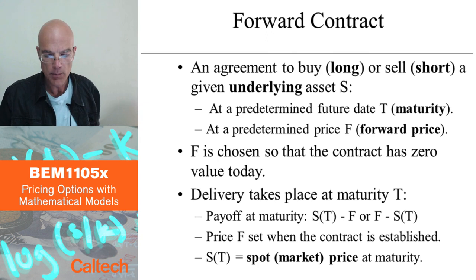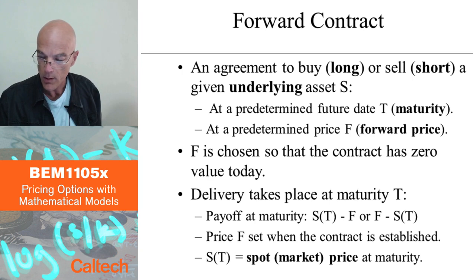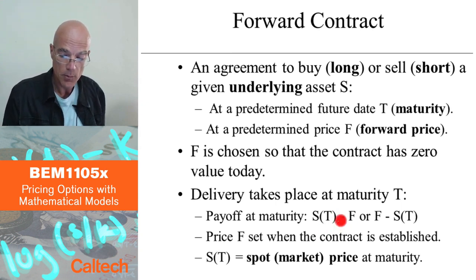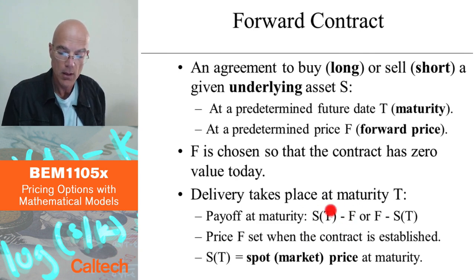The delivery takes place at maturity. In practice, usually there is no delivery — there is just a cash exchange. The payoff at maturity depends on whether you are long or short the contract. If you are long, you will get S(T) — the value of, say, one pound of sugar at time T — but you have to pay F, so the payoff is S(T) minus F. That's the payoff at maturity for the long counterparty.